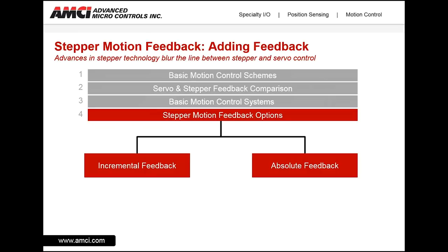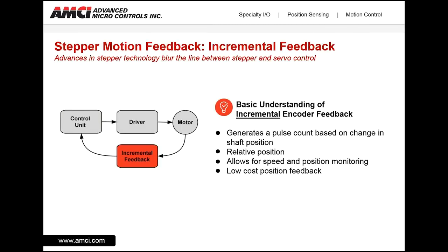Let's start by looking at incremental feedback with steppers. An incremental encoder generates a pulse count based on a change in shaft position. This change is referred to as relative position — it does not tell the user where it is, but how far it has traveled since the last position. Incremental encoders are a good choice for applications that require speed monitoring as well as position monitoring, and carry a lower cost when compared to absolute position feedback.